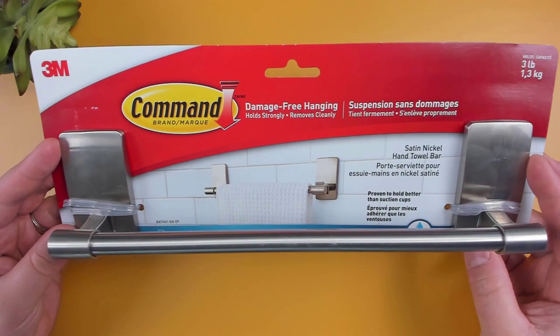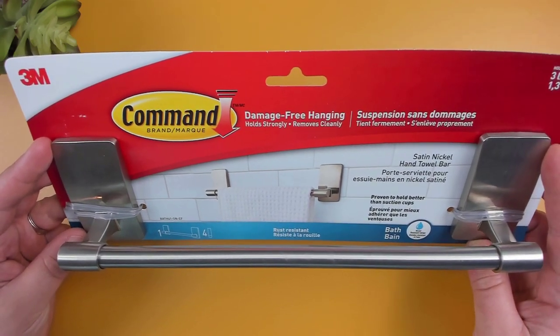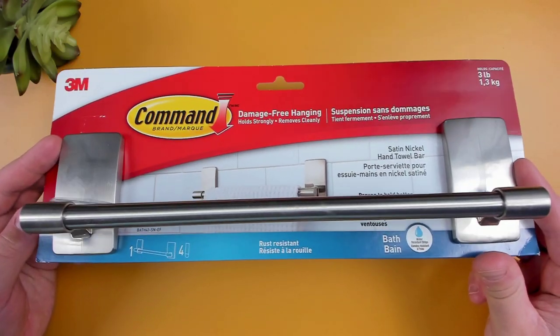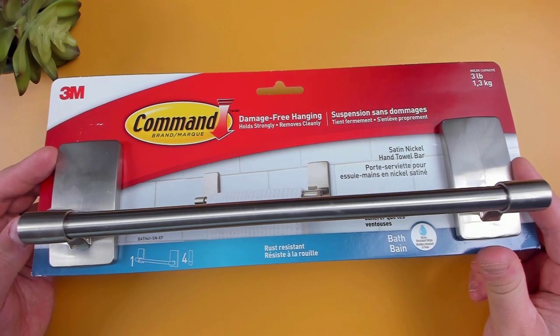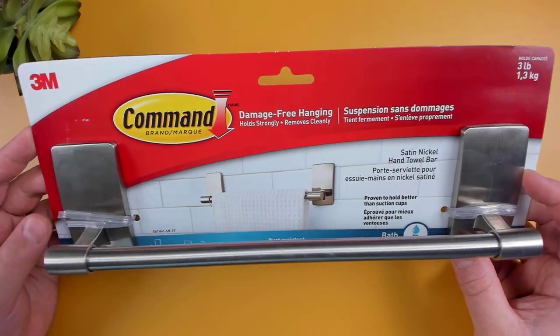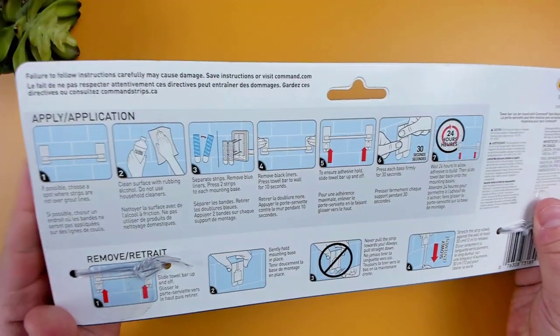Taking a closer look at the towel bar, the overall width is just under 12 inches wide, the bar itself being 9 inches. It's 3 inches in height and holds up to 3 pounds. The bar seems to be made of aluminum while the rest is made of plastic. Over on the back is where you get to find the instructions on how to mount it.